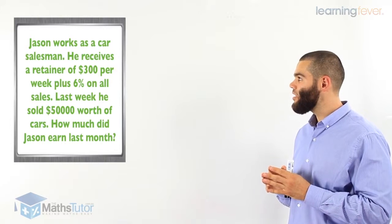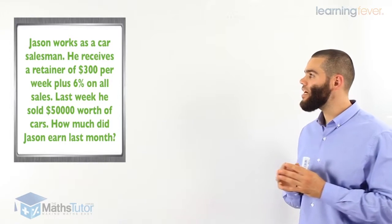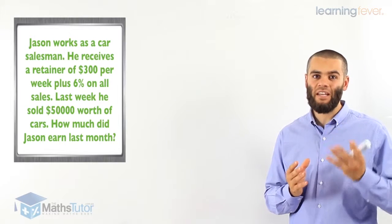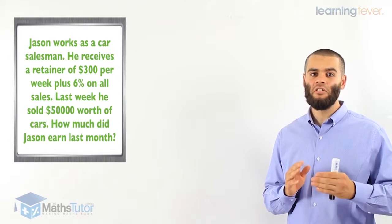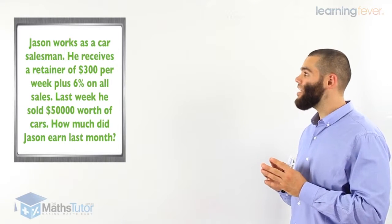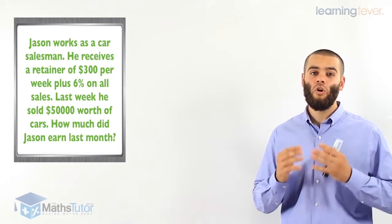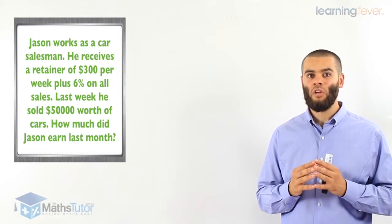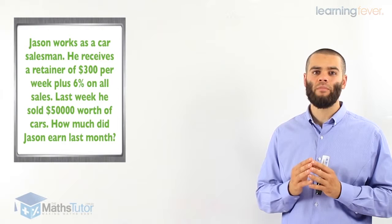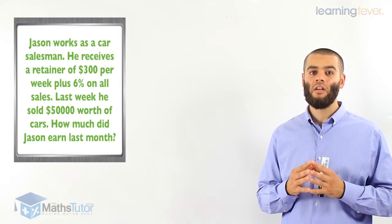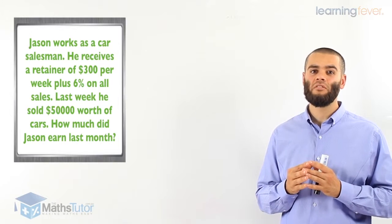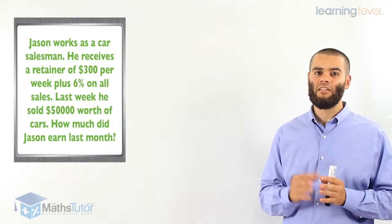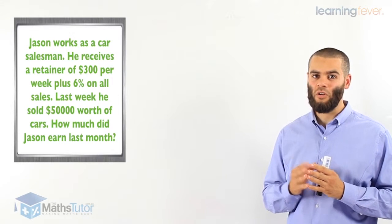Jason works as a car salesman. He receives a retainer of $300 per week. So that's his guaranteed wage. He gets $300 every week, whether he sells or doesn't sell cars. Plus he gets 6% on all sales. Last week he sold $50,000 worth of cars. How much did Jason earn last week? So we notice that he has two payments. He earns his retainer $300 plus he earns 6% of the sales. So we have to add the retainer he gets on a weekly basis plus the commission that he gets also. Let's work it out.